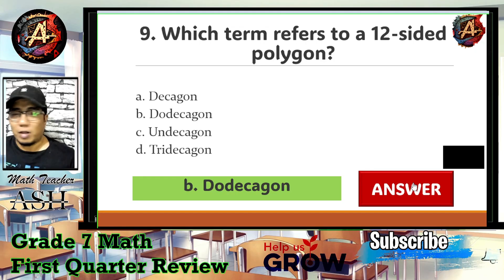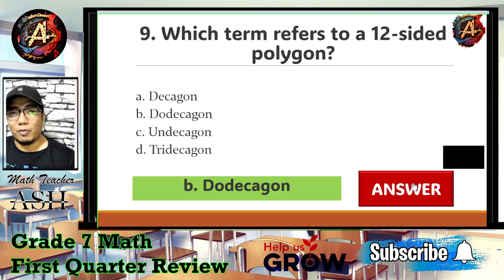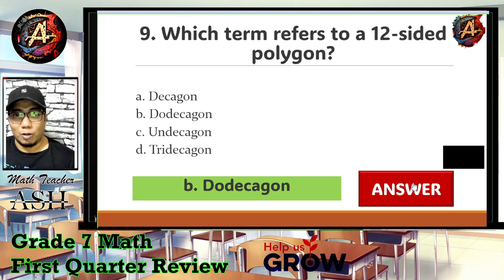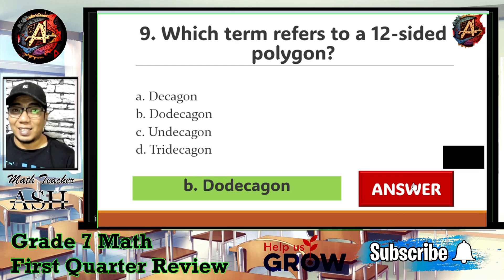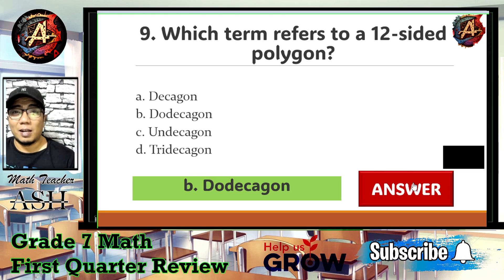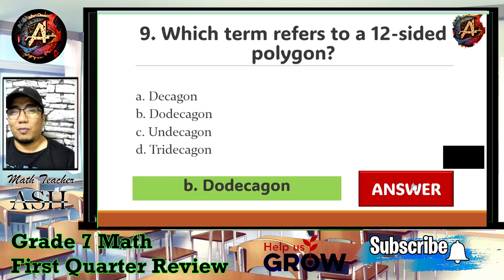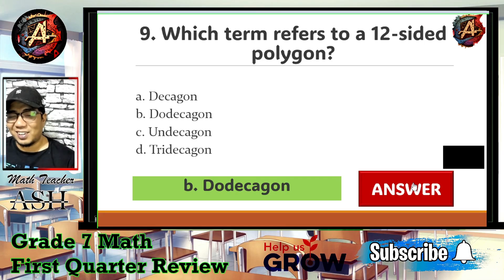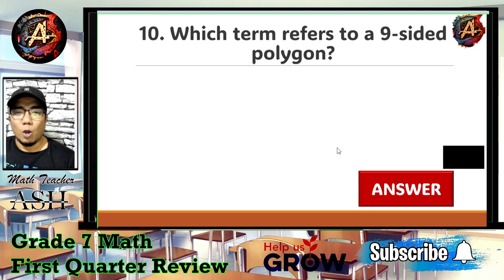Decagon means 10 sides; undecagon means 11 sides. Tridecagon is not a standard polygon name — after the dodecagon, polygons are referred to as n-gons, where n is the number of sides. So 13 sides would be a 13-gon, 14 sides a 14-gon, and so on.